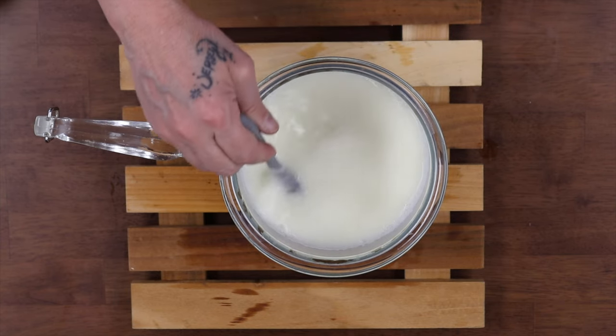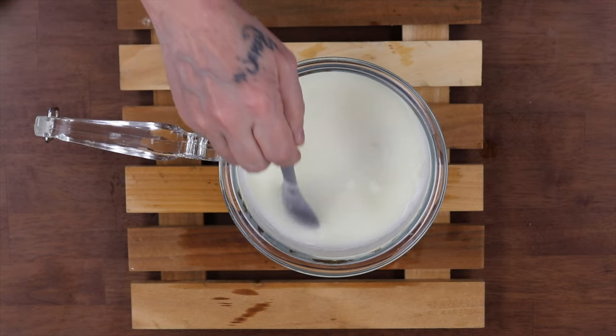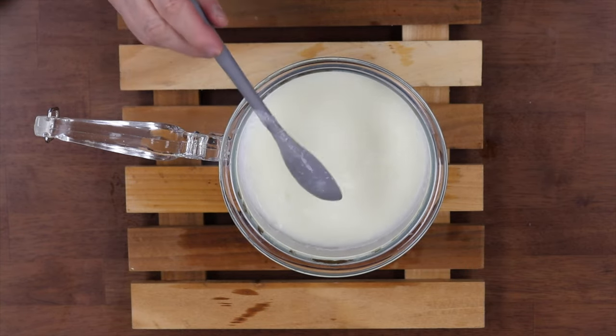You need to cover it with a flour sack towel or put the lid on. I'm going to put the lid on, and then we're going to go back to the stove, use the other half of the gallon, and make the cheese with the citric acid. We're going to leave the lid on for 30 minutes and then we'll be back.